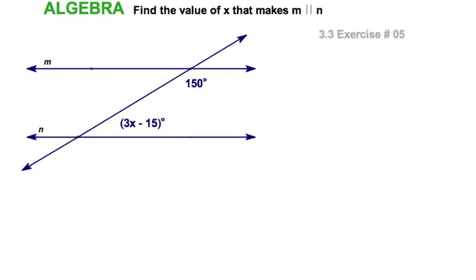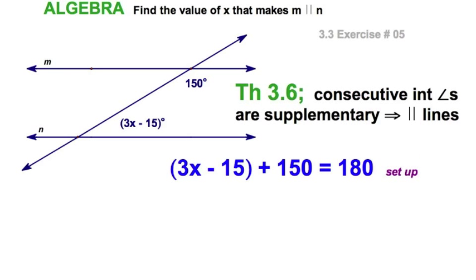Well, let's make our lines m and n parallel again. This time we've got two angles that are not corresponding, they're not alternate interior, they're not alternate exterior. They are consecutive interior. They're not going to be congruent. We have to watch this. They need to be supplementary. So add these two expressions together, set them equal to 180 and that's going to give you your parallel lines.